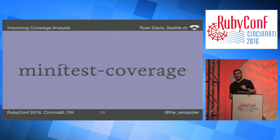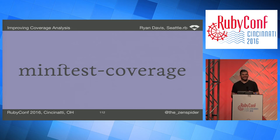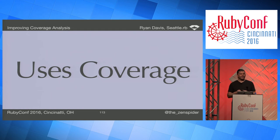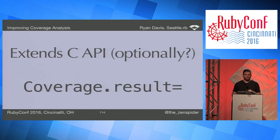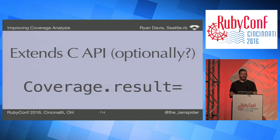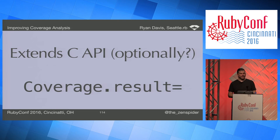So what can we do to improve this? I just created a new gem called minitest-coverage and released it 25 minutes ago. It also uses `coverage` because I can't instrument the bytecode directly yet, which means it can suffer from the same problems. It does extend the C API — hopefully optionally — and adds a setter to `coverage`. It's really hard to write tests for minitest-coverage — ironically.